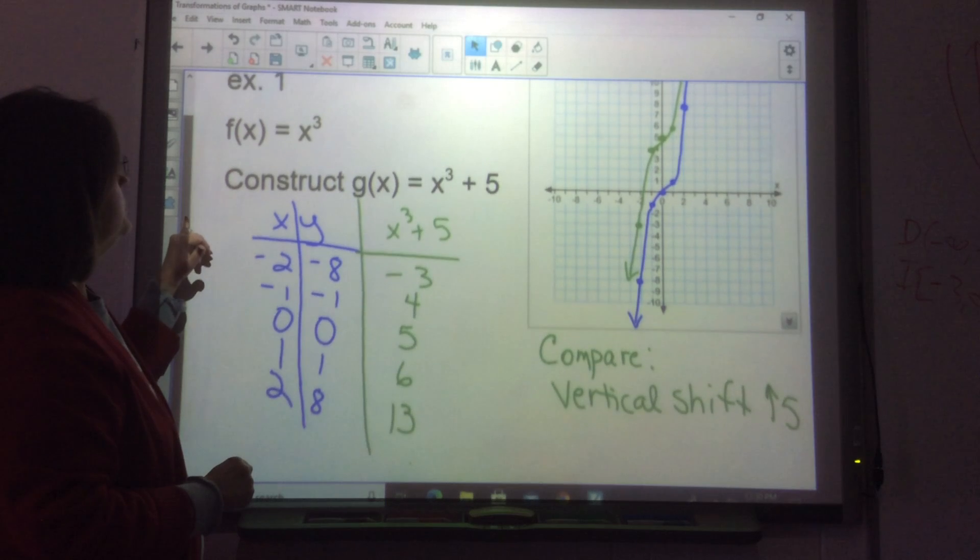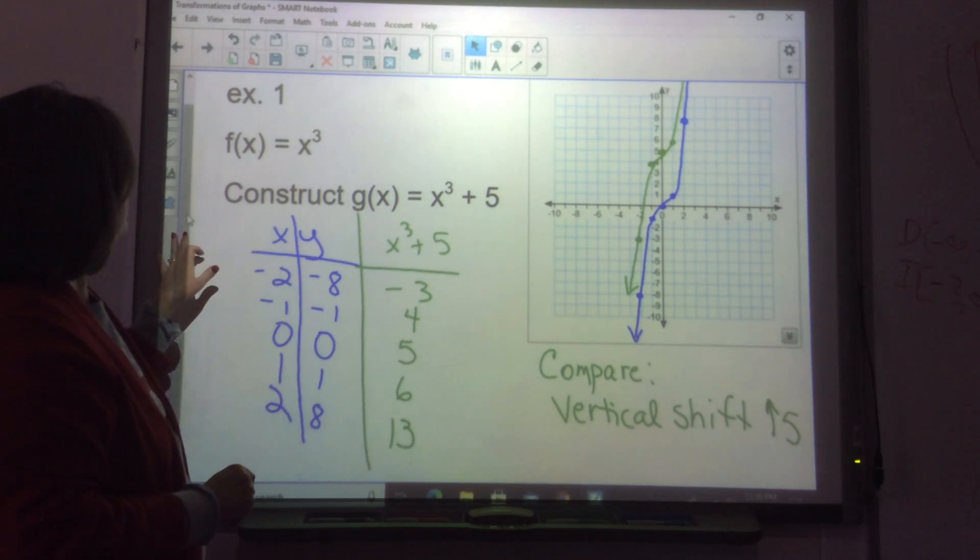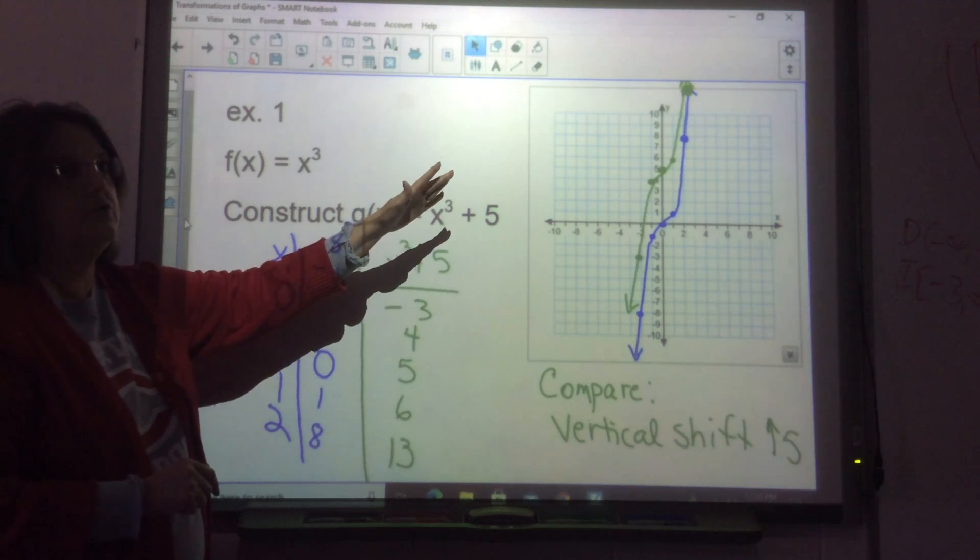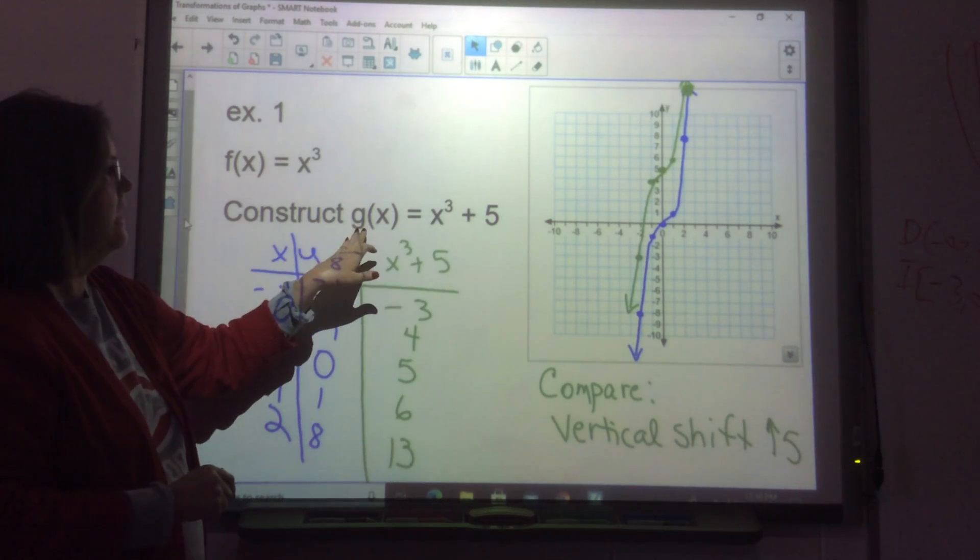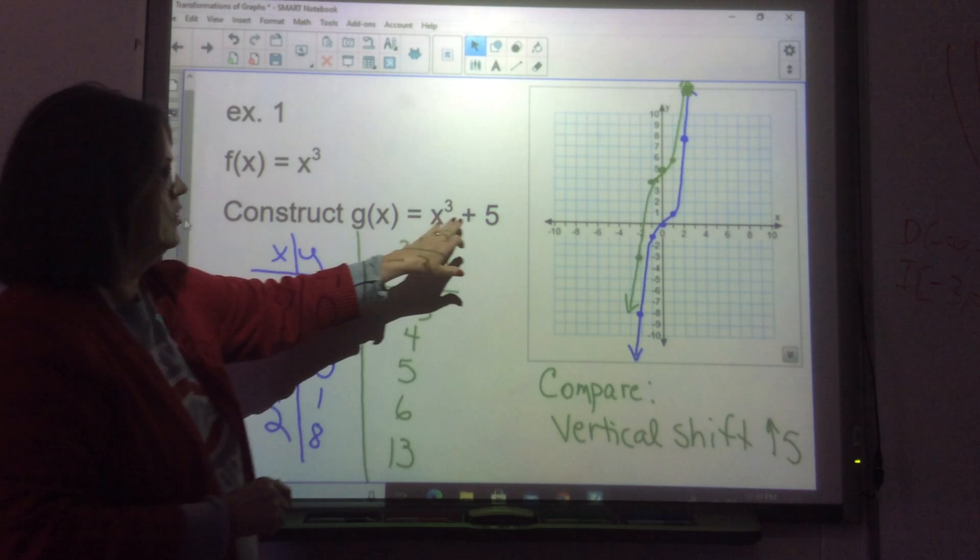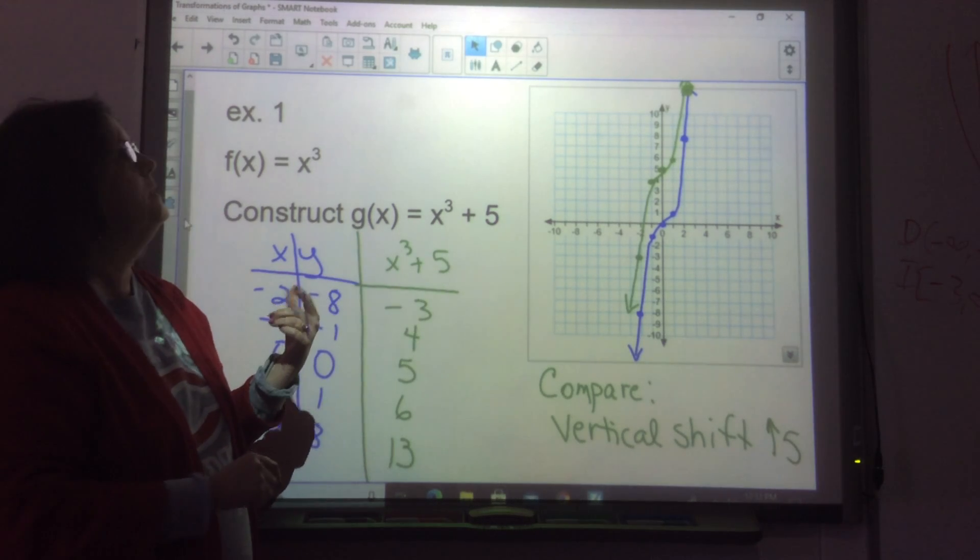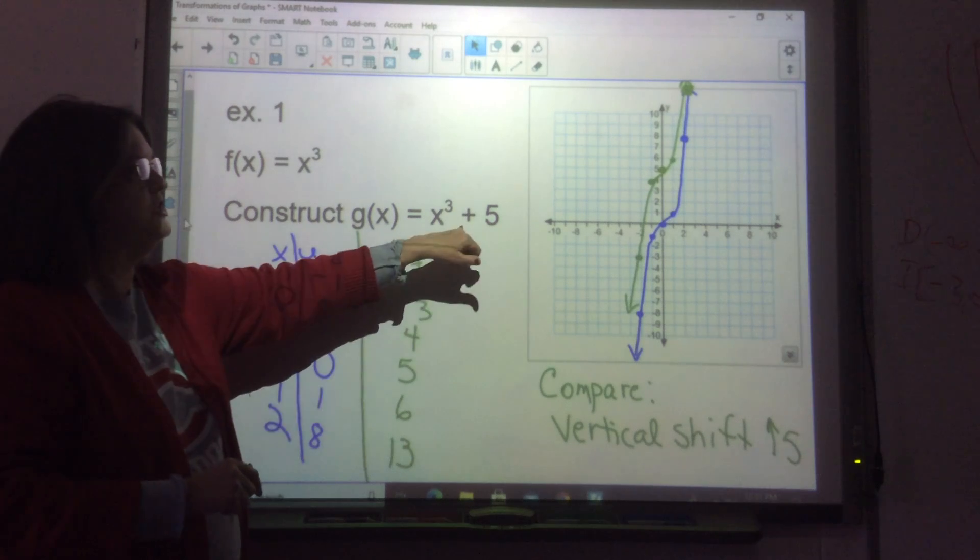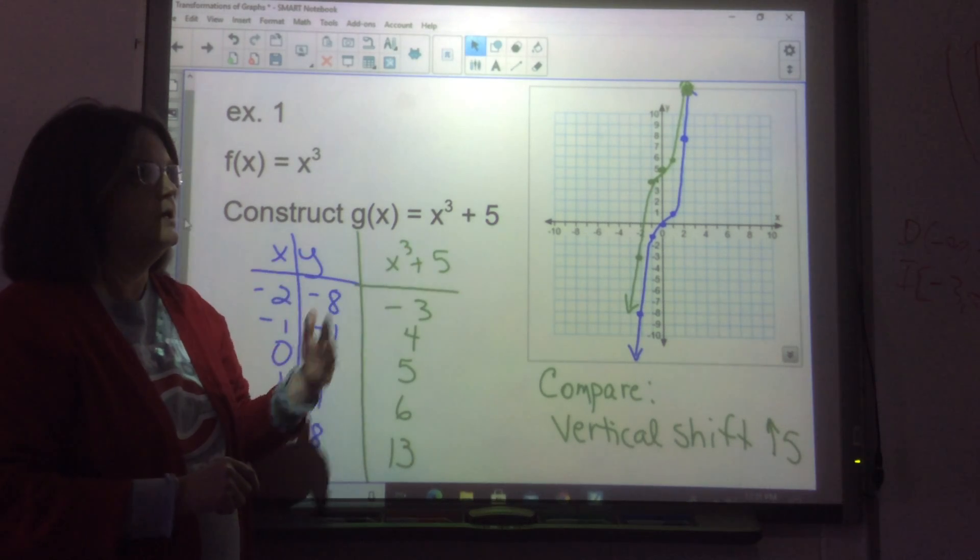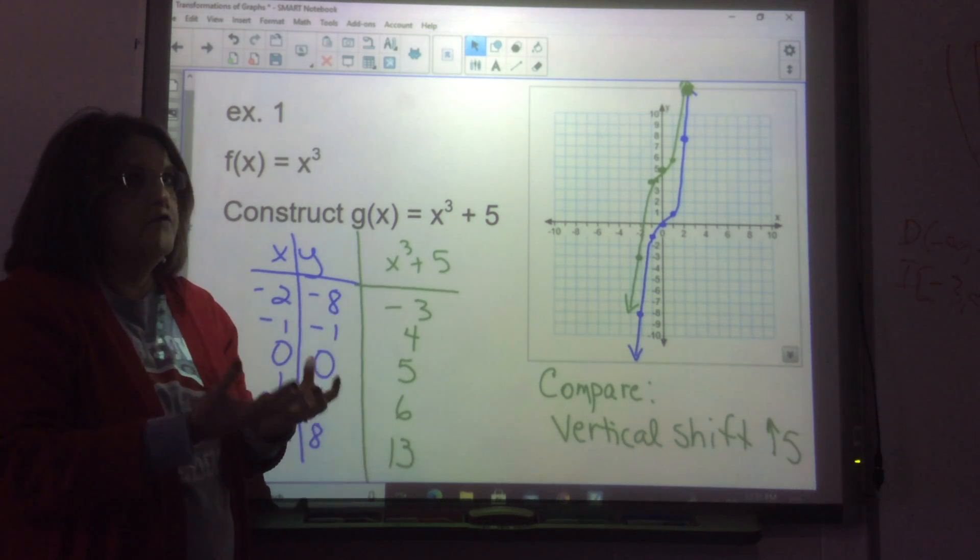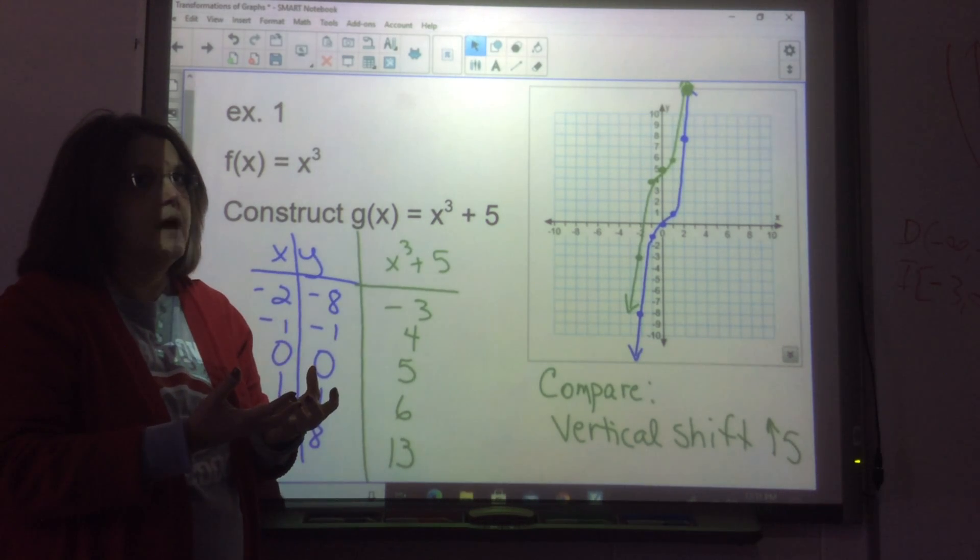Now, I'm going to take that graph, the blue graph, and I'm going to do this graph alongside it just so you can see what happens. I have g(x) is x³ plus 5. It's not in parentheses. It's going to take that graph and shift it up 5 units. You can actually sketch this from your head faster than you can type it into a calculator and look at it if you know what you're doing.